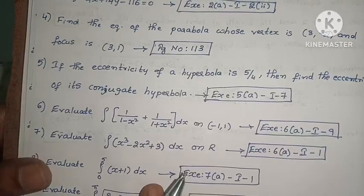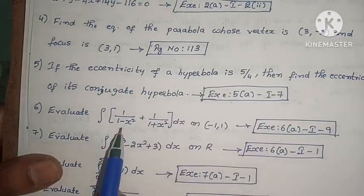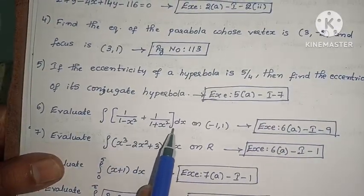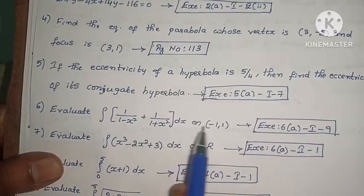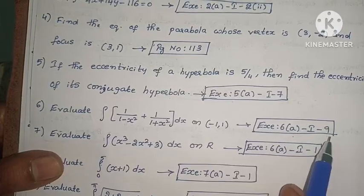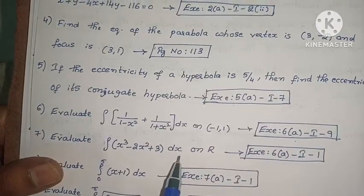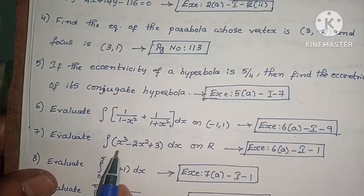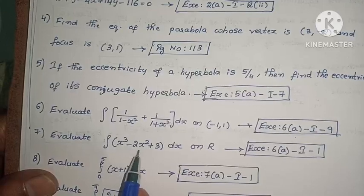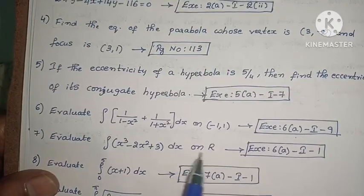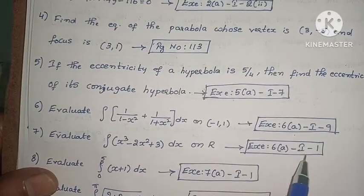Next: evaluate ∫ [1/(1 - x²) + 1/(1 + x²)] dx. This is question 6, first exercise, third problem. Next: evaluate ∫ (x³ - 2x² + 3) dx. This is also question 6, first exercise, third problem.